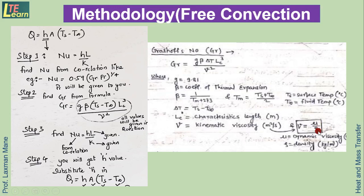If dynamic viscosity is given, kinematic viscosity can be calculated as ν = μ/ρ. After finding the Grashof number, we use the Nusselt number correlation to find Nu, then rearrange Nu = H·L/K to find H. Finally, substituting H into Q = H·A·ΔT gives the heat transfer rate.